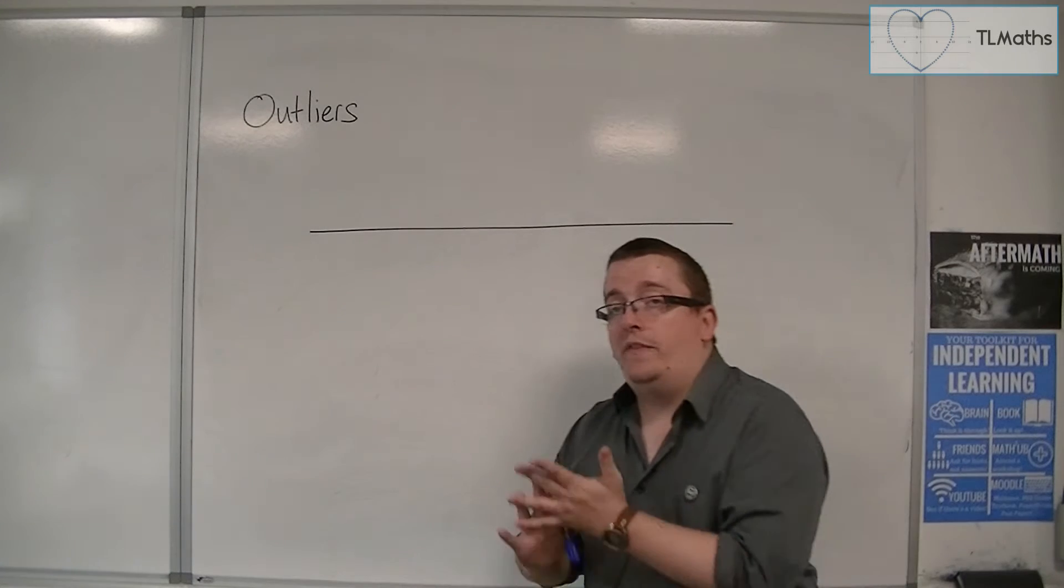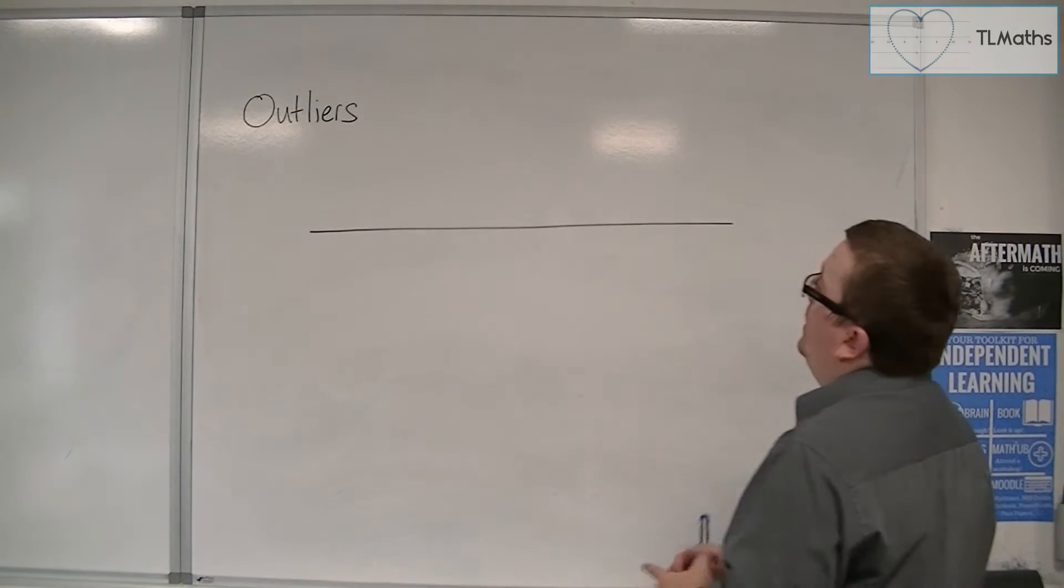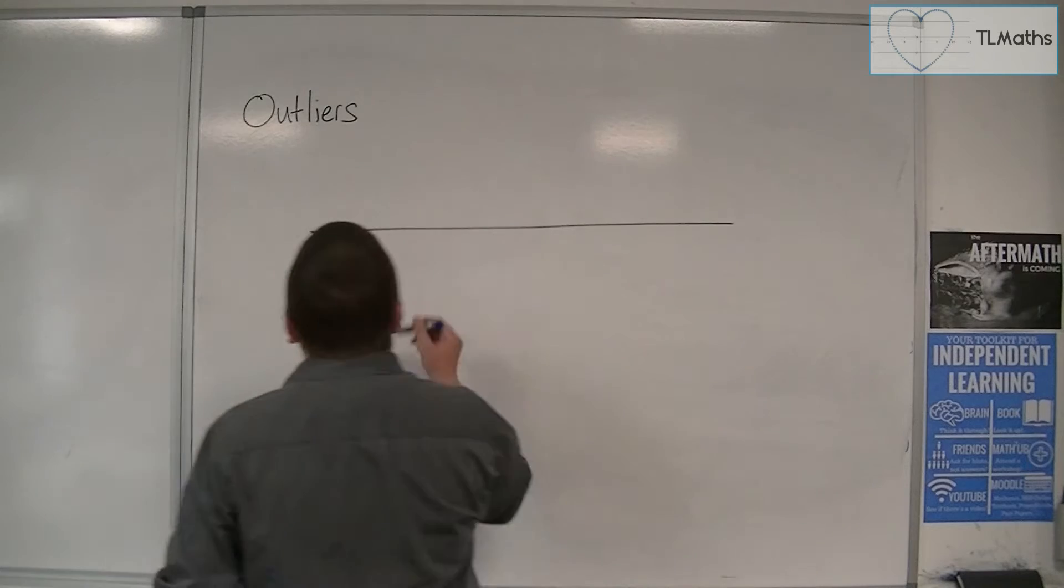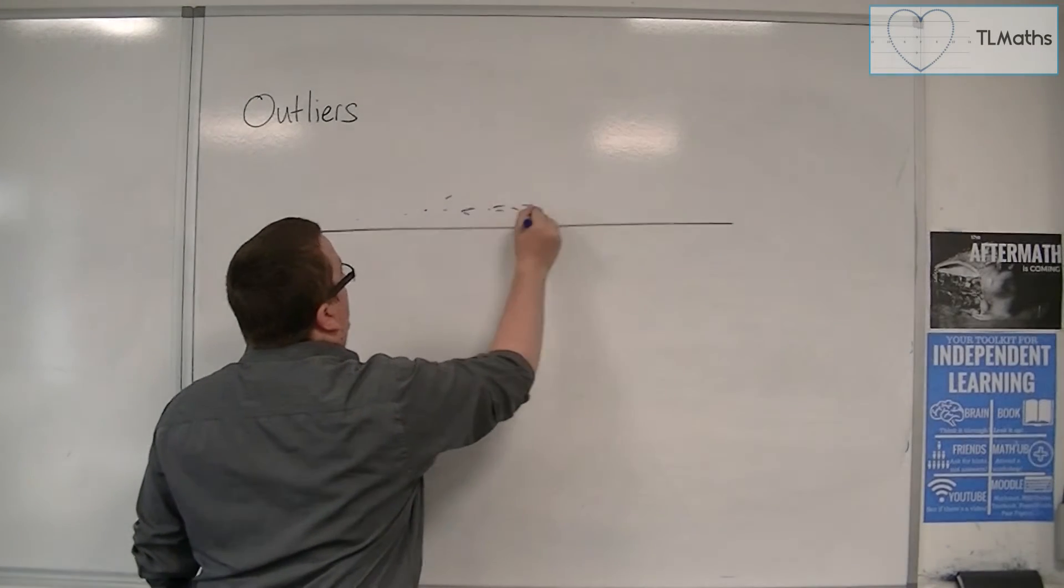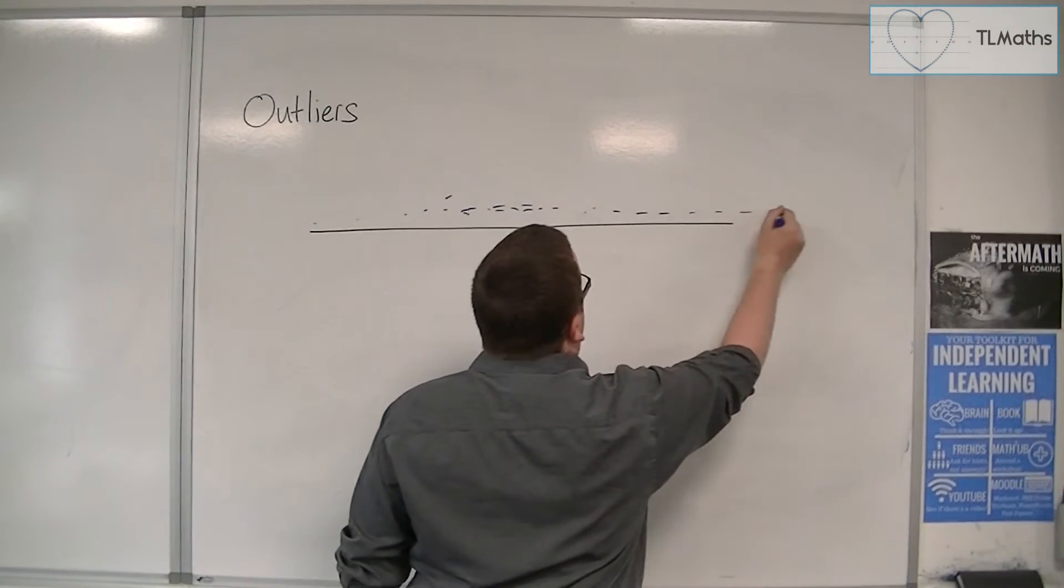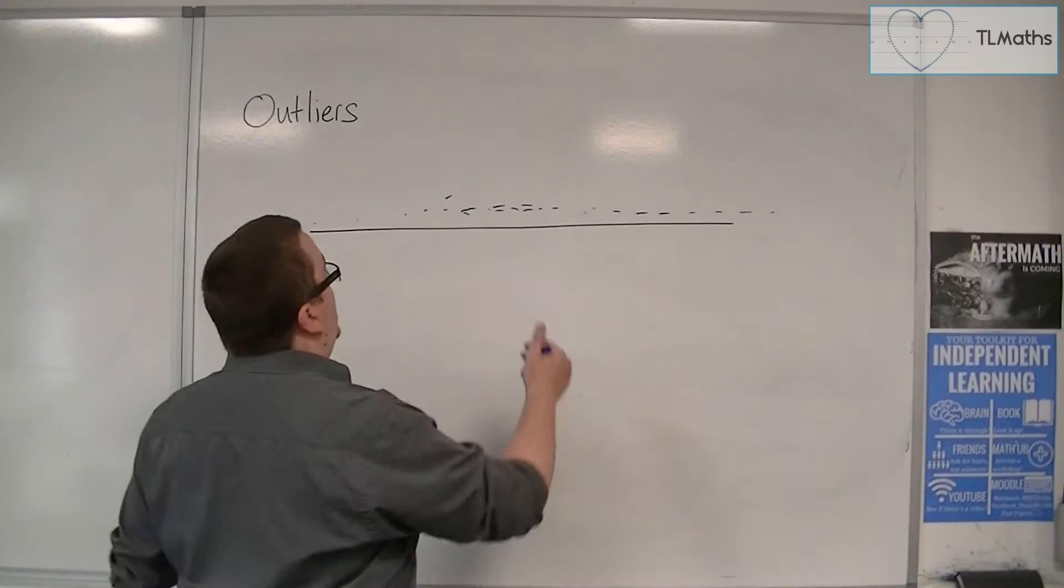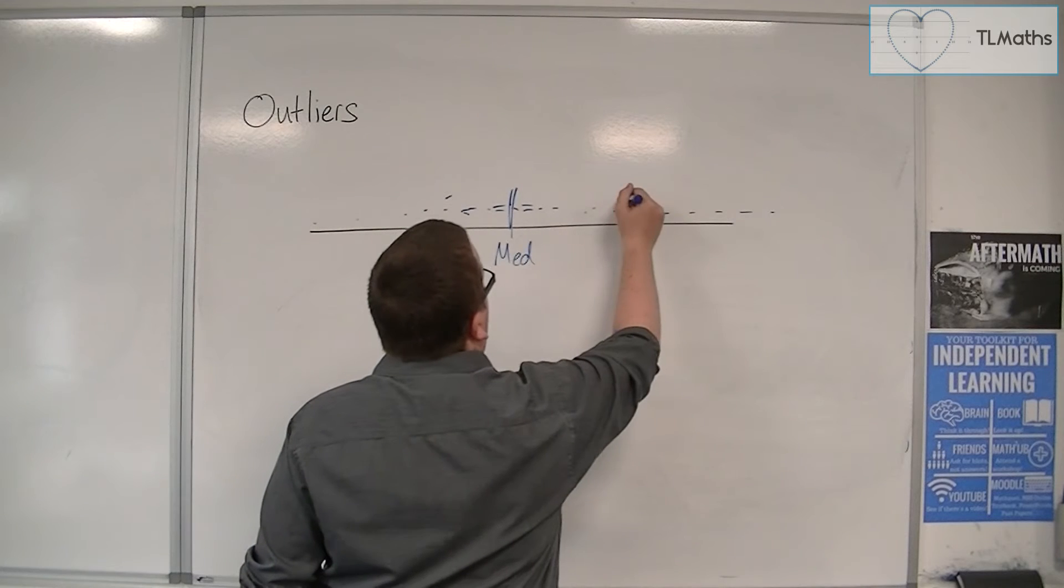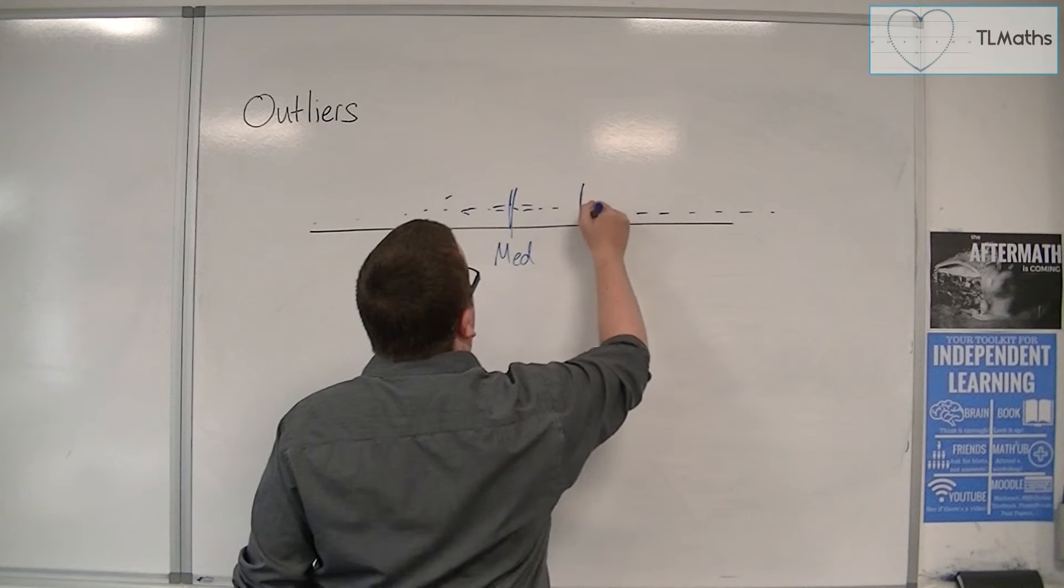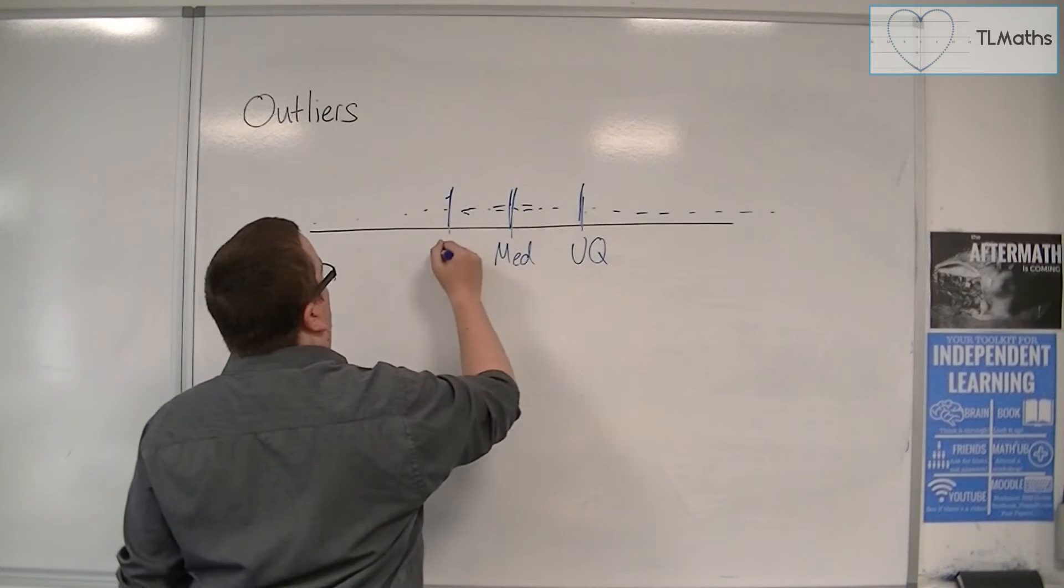So let's say that we have our data, and it's spread out in such a way, something like that. What we've done is we have calculated the median. We have calculated the upper quartile, which may be something like there, and we've calculated the lower quartile.